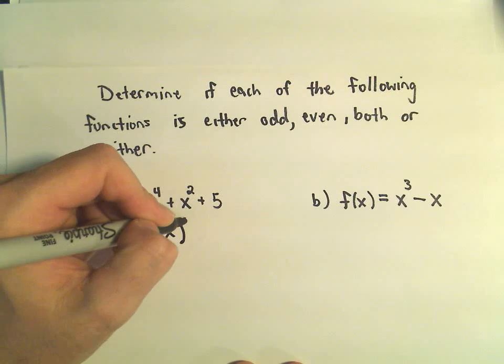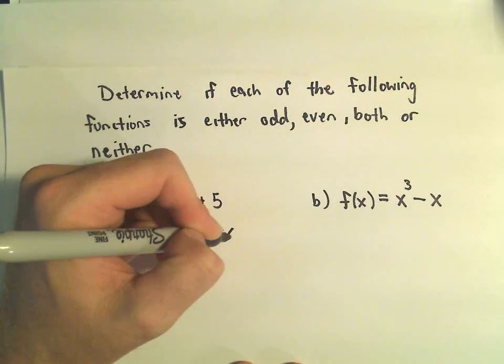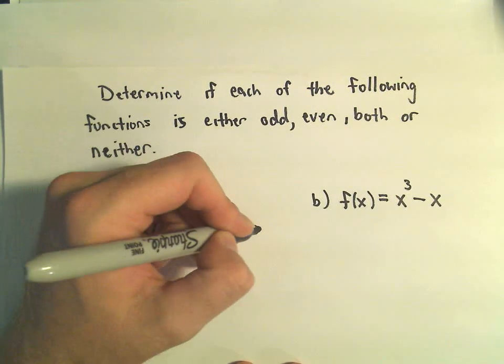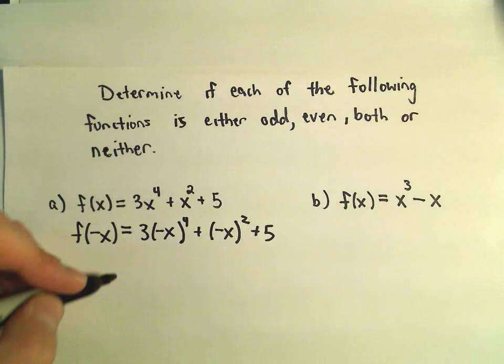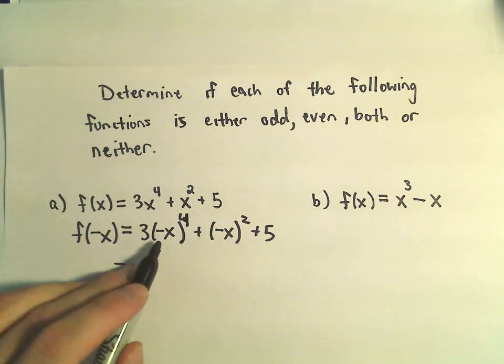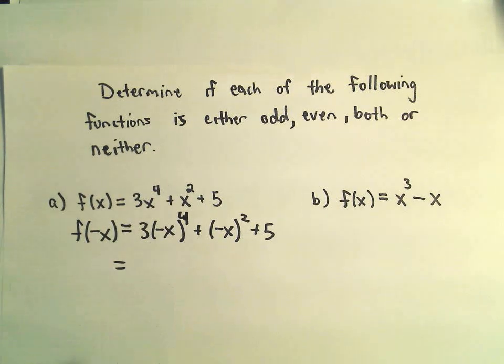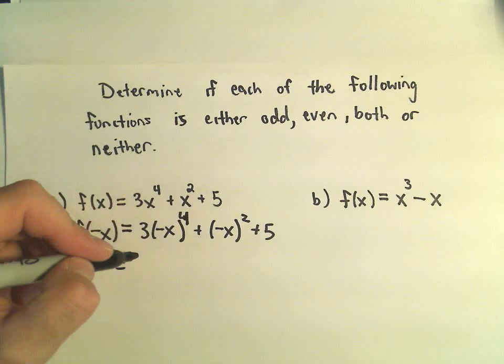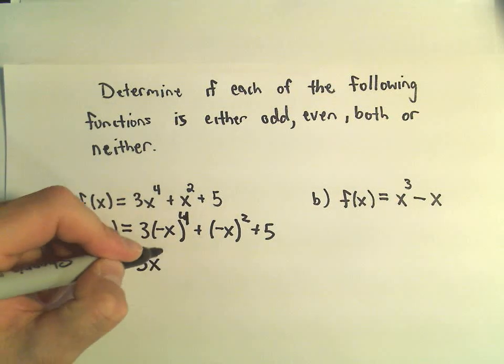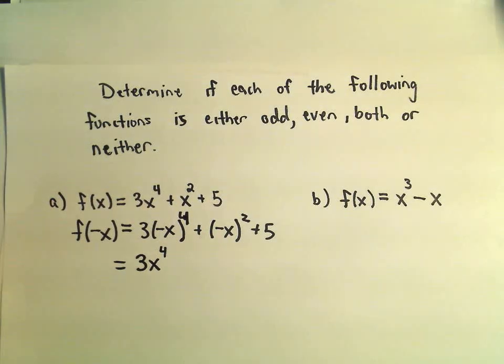So negative x to the fourth, negative x squared plus five. Well, if you take a negative number and raise it to an even power, it's going to be positive. x to the fourth would still be x to the fourth. So this would just simplify to 3x to the fourth.